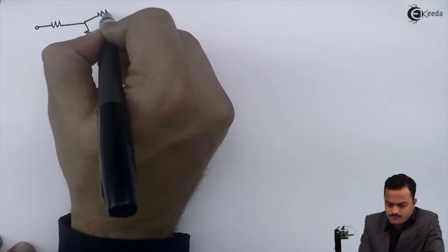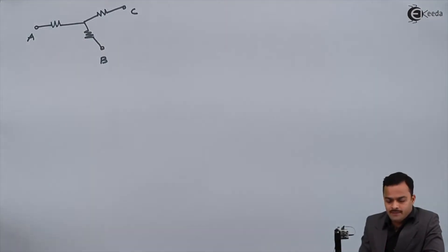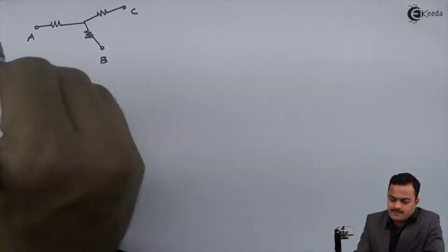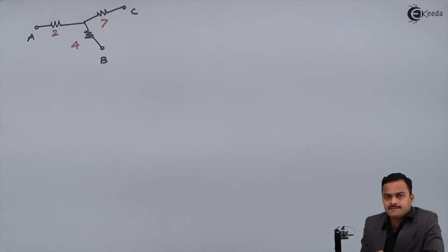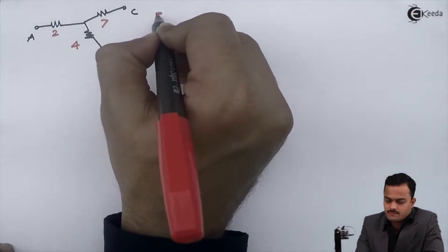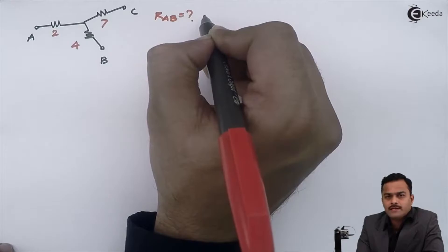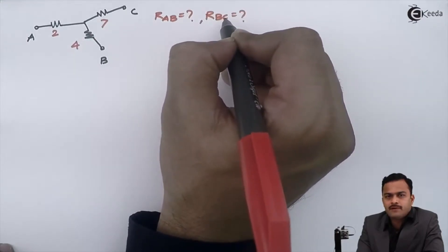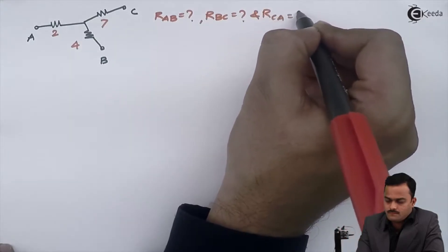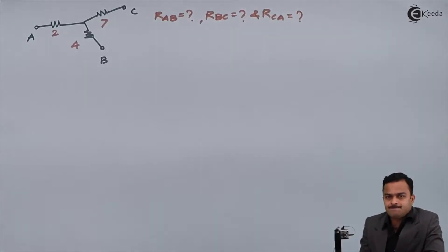In this video we are going to see the concept of open circuit through a simple numerical. Consider three points with three resistors connected to them. The points are A, B, and C, with 2 ohm, 4 ohm, and 7 ohm resistors connected. The objective is to find the equivalent resistance between points A and B, between points B and C, and between points C and A.